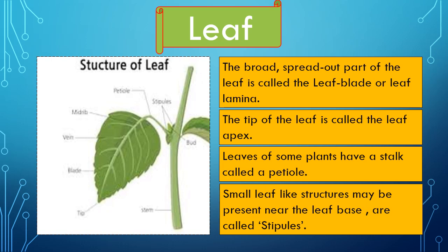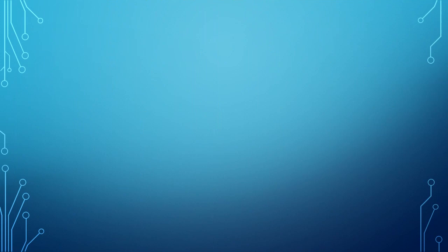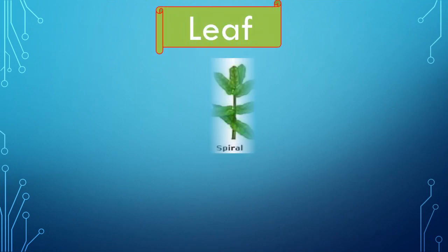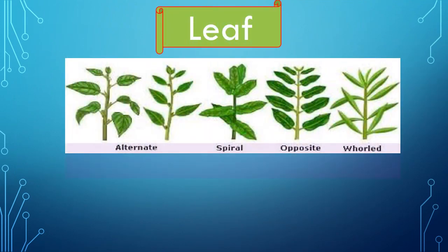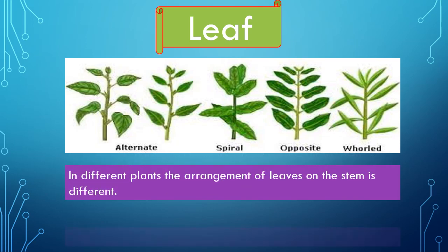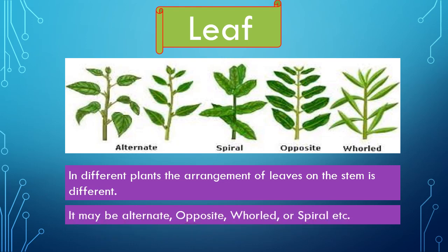Leaves may be of two different types: simple leaves and compound leaves. The arrangement of leaves on the stem is different in different plants — it may be alternate, opposite, whorl, spiral, etc. According to the shape, leaves are rounded, that is obovate, palmate, lanceolate, linear, etc.